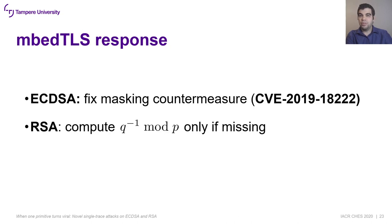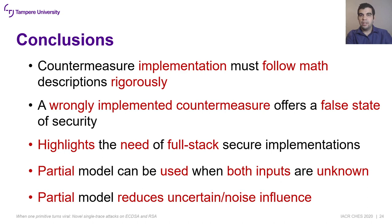As an outcome of this research, we contacted MBTLS to report our findings. They recognized the vulnerabilities and developed workarounds: for ECDSA, they implemented the countermeasure correctly; for RSA, they only compute the CRT parameter if it is not present in the private key, reducing the attacker's chances. The main conclusion is that countermeasure implementations must strictly follow their mathematical descriptions, since a wrongly implemented countermeasure offers a false sense of security. The attacks highlight the need for full-stack security, and the partial leakage model was shown to be applicable even when both inputs are unknown, while reducing uncertainty and noise influence.